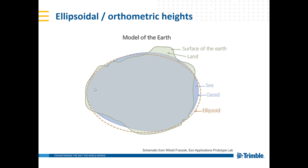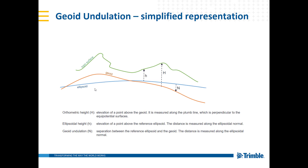These are the three models of the earth we need to take into account. We typically talk about orthometric height, which is in relation to our geoid — a more detailed model of the earth. Ground control points are generally in this local area and want to be as accurate as possible, so they are in relation to the geoid. Ground control points should normally be orthometric heights, representing our topographic surface in relation to the geoid.